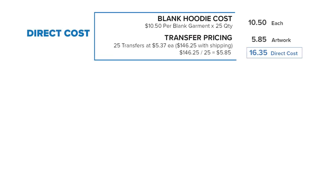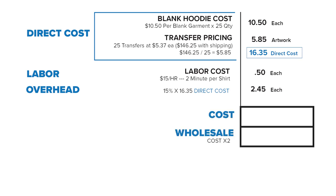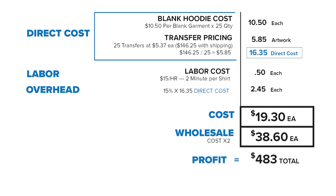In this next example, for a two-color print on a hoodie with a front design and a sleeve and a quantity of 25, we'll look at the cost-based strategy first. Taking our transfer cost, shirt cost, overhead, and labor, your total comes to $19.30. You can sell this shirt to a team for $38.60 per shirt and you profit a total of $483.00.